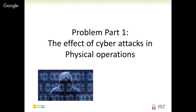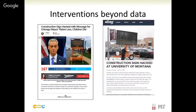We understand the problem as having two parts. The first is the effects cyber attacks are having on physical operations, and the second is how we are reacting to these attacks. Beyond data theft or data alteration, cyber attacks affect physical things in the world around us. One example is the hacking of construction signs — a way of physically changing how we interact with the world through a cyber attack. Hackers have been able to convey all types of messages through these interventions.